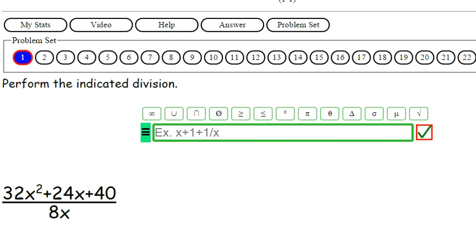And we've got 32x squared plus 24x plus 40, and that's all over 8x. Got it. So 32x squared plus 24x plus 40 over 8x.